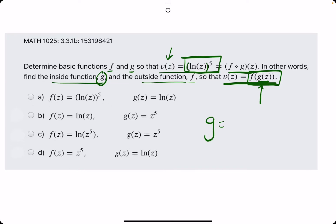hopefully it's as easy as, okay well there's parentheses here, so our inside piece is the ln of z, which means our inside function is ln of z.